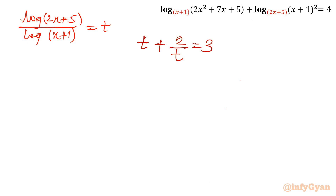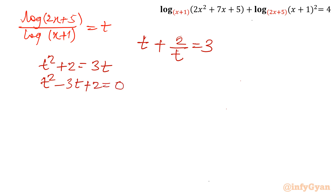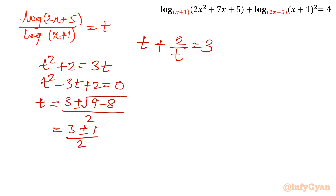Multiply both sides by t: t² + 2 = 3t. Taking factors or using the quadratic formula: (3 ± √(9−8))/2 = (3 ± 1)/2, giving 4/2 = 2 and 2/2 = 1. So t has two values: t = 1 and t = 2.